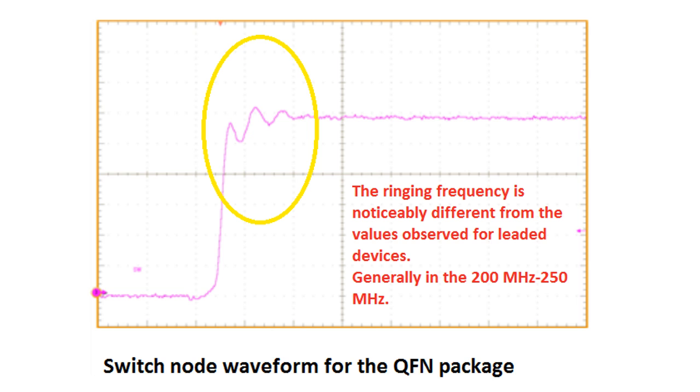This is visible in reduced overshoot when observing the switch node, as shown in the figure. The ringing frequency is noticeably different from the values observed for leaded devices, generally in the 200 MHz to 250 MHz range.